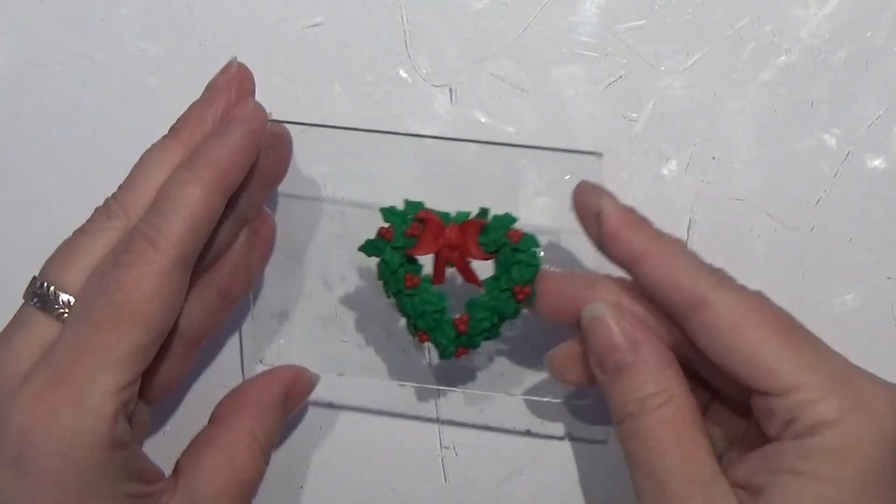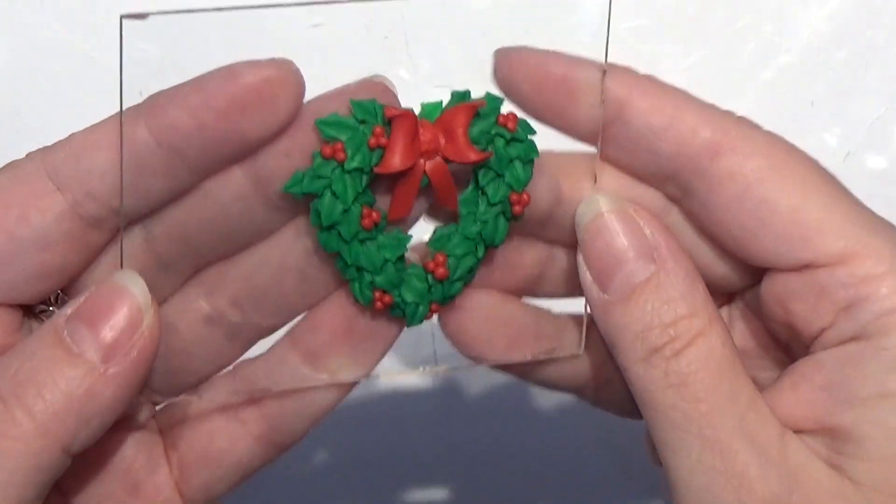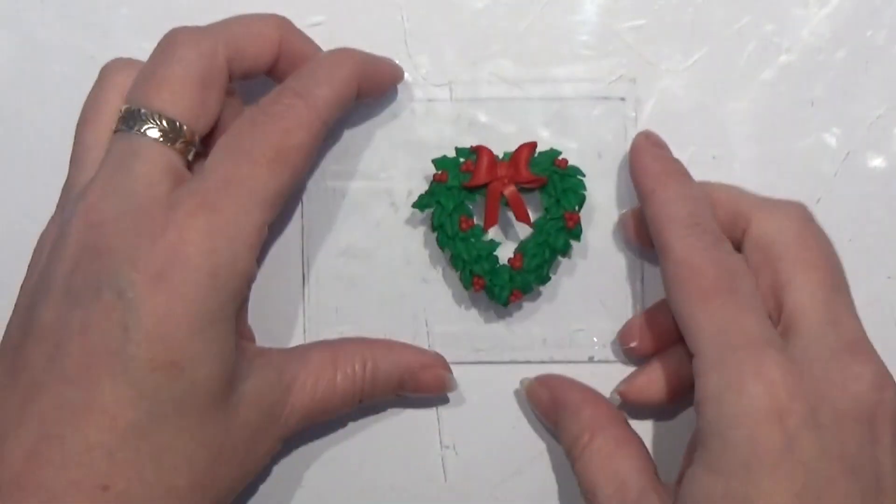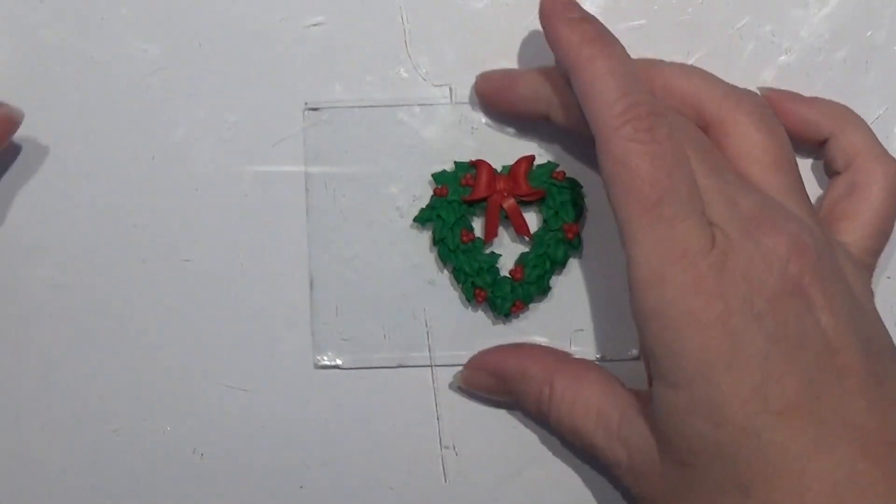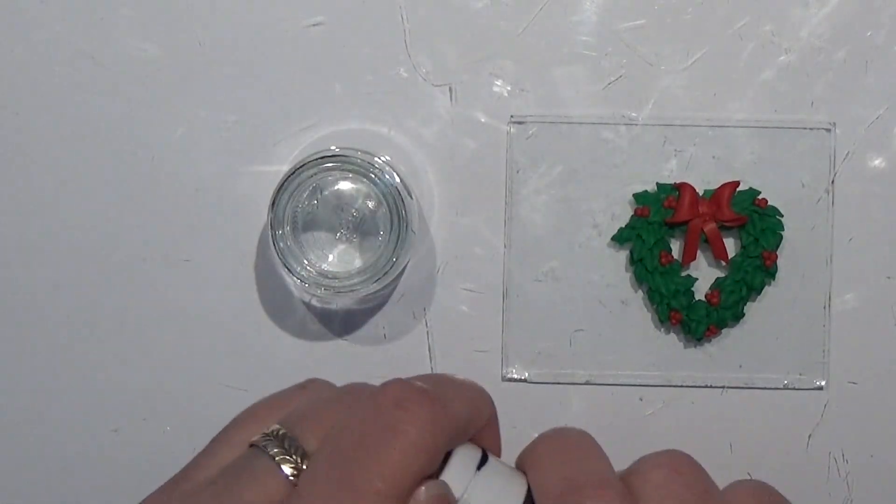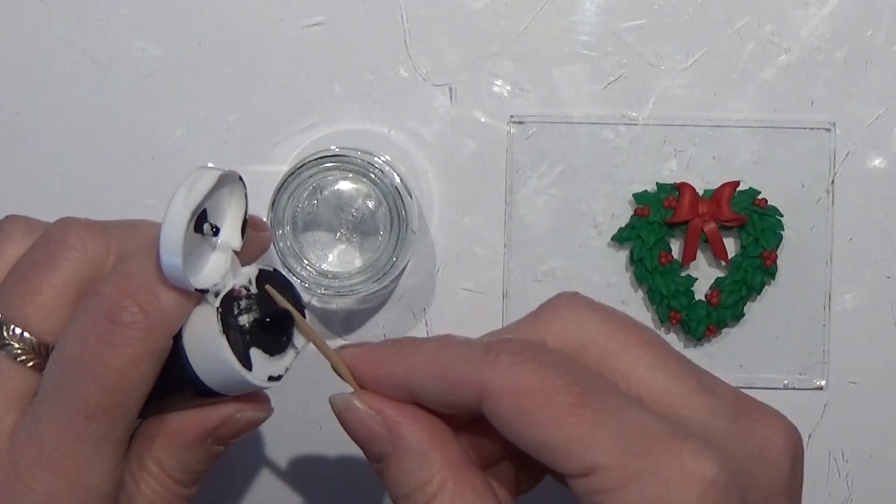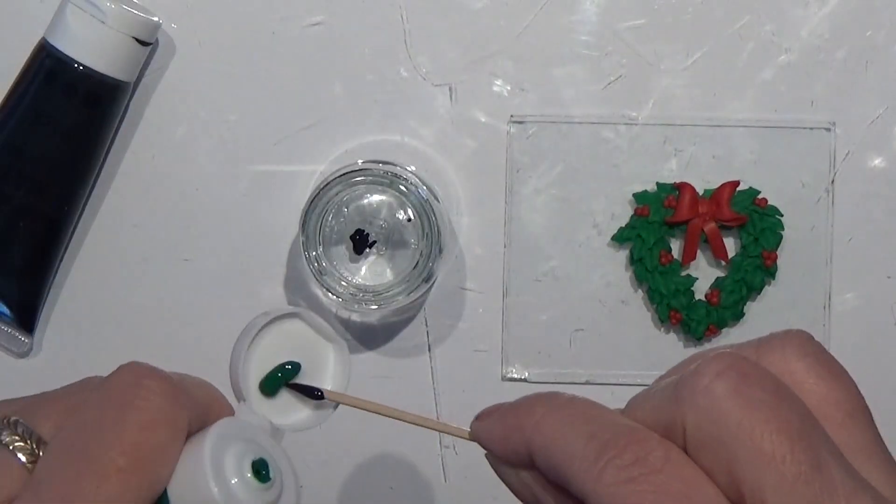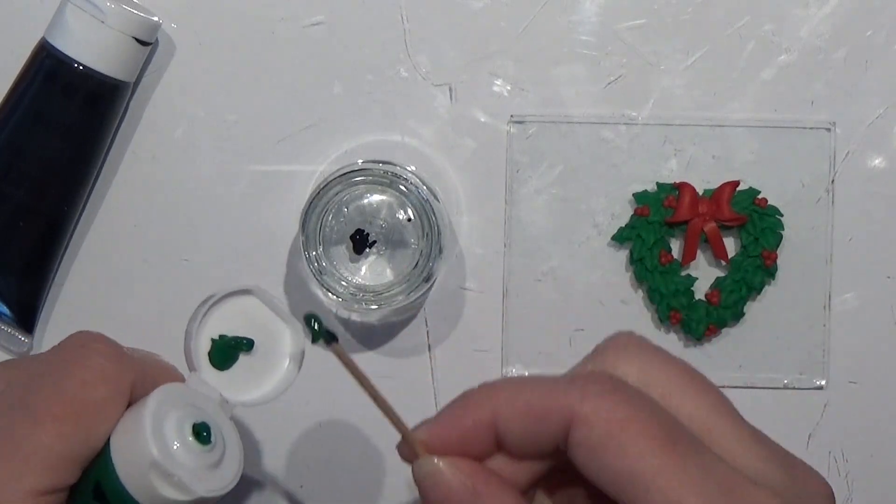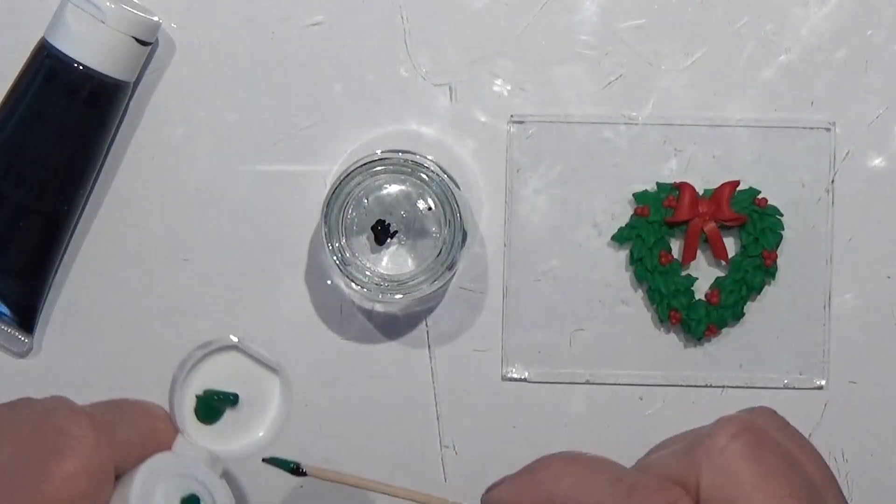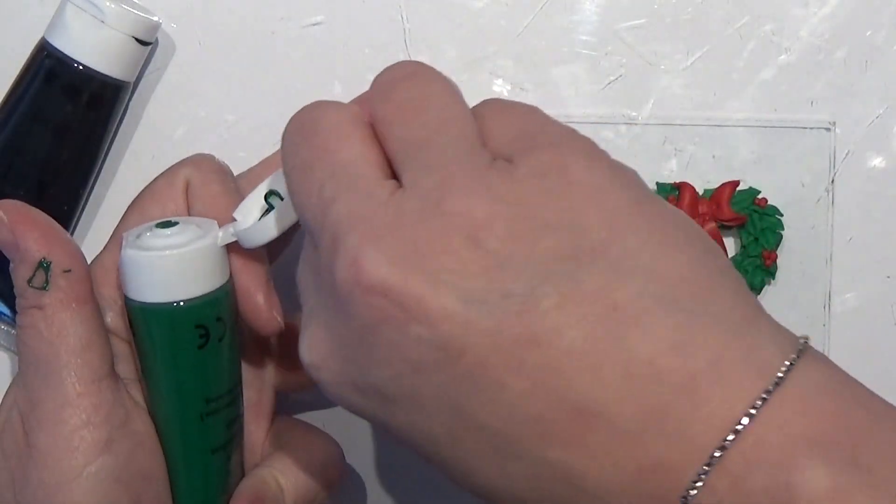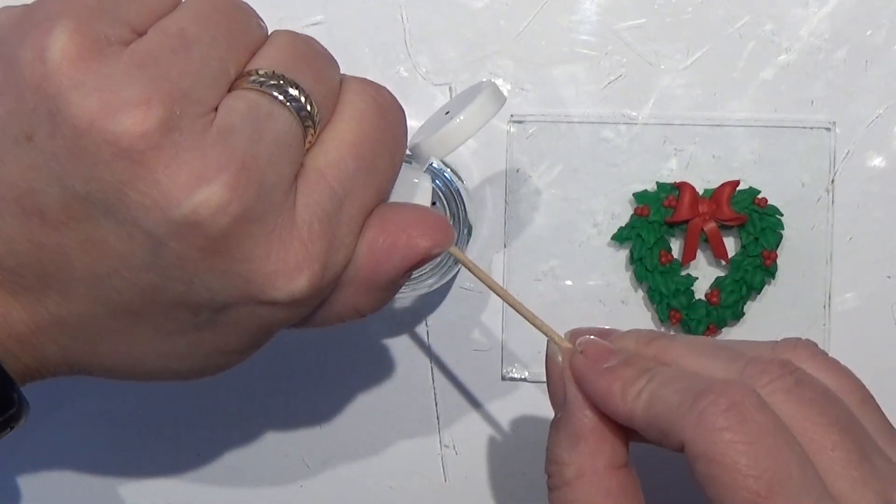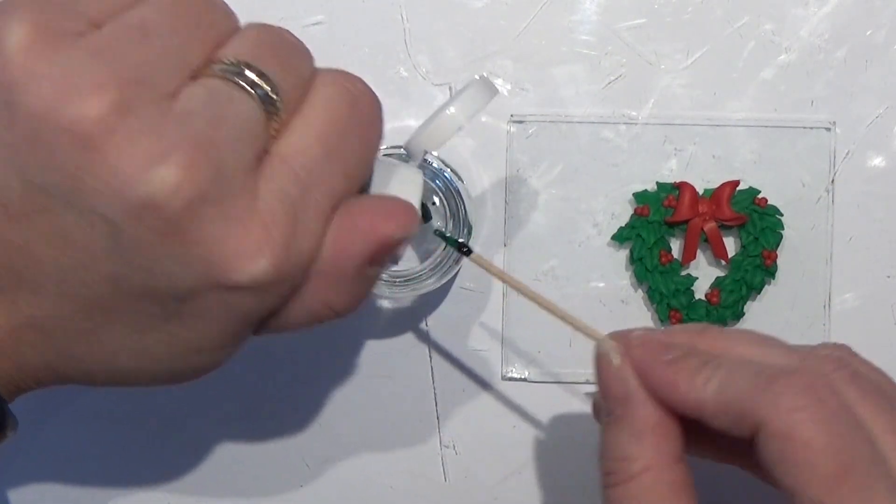So this is how my wreath looks now. It's very flat so I'm going to make a few highlights on it. First of all I'm going to make a dark wash for it. I'm going to take a little bit of my black colors here and I'm going to take a little more of my green.